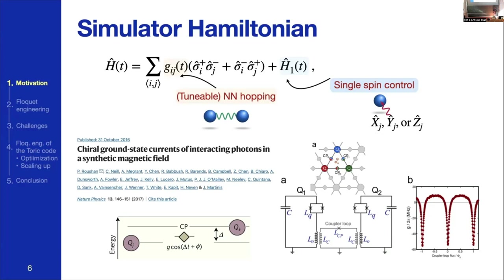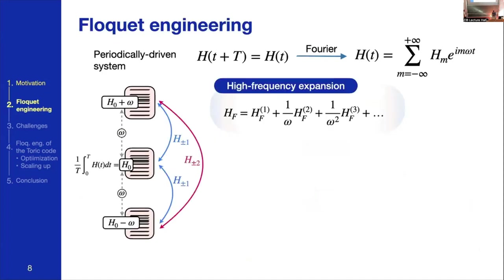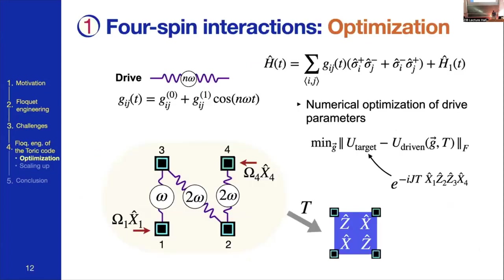Question: You mentioned that to engineer the high-order terms, you have this cosine drive and the couplings. Do you also need to drive the local fields, or is it sufficient to drive the coupling terms? Answer: In this case, yes — we also need a constant local X drive, just for the boundary terms. That's because the simulator Hamiltonian conserves the number of excitations as a hopping Hamiltonian, while the target Hamiltonian doesn't. So in the end, we also need one of those local drives.